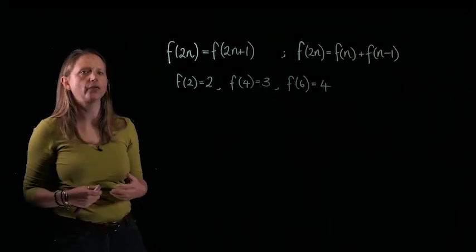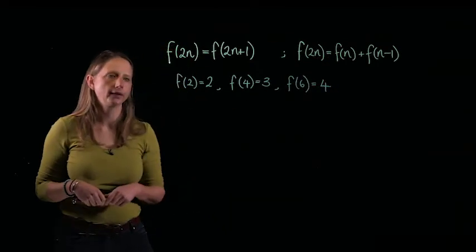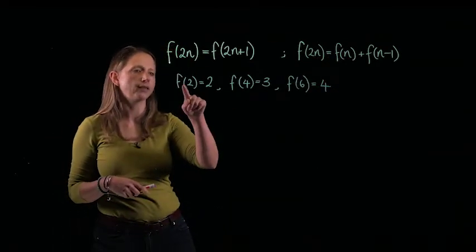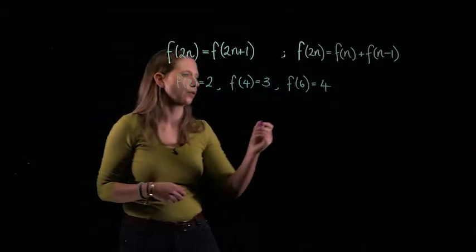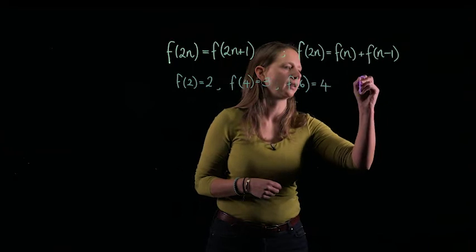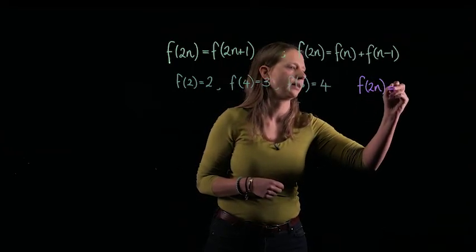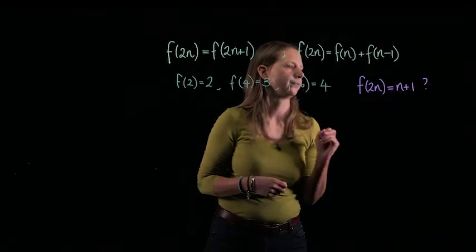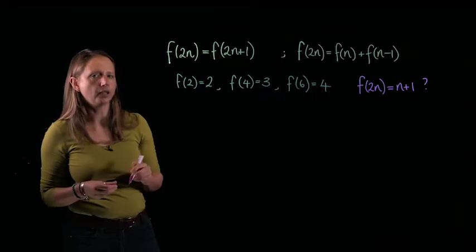What we've got so far is these two relationships and we've looked at some small cases. If we look at these small cases, f of 2 is 2, f of 4 is 3, f of 6 is 4. It looks like f of 2n is n plus 1. And that's what we're going to try and prove. We're going to prove this using induction.